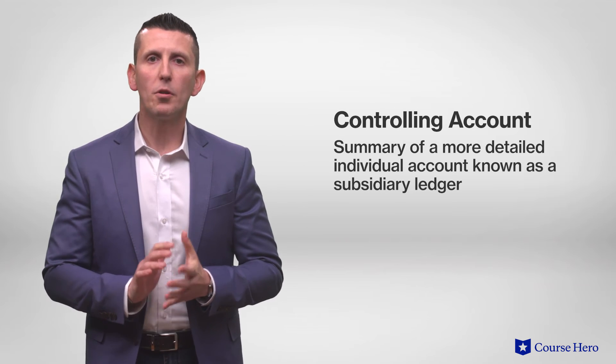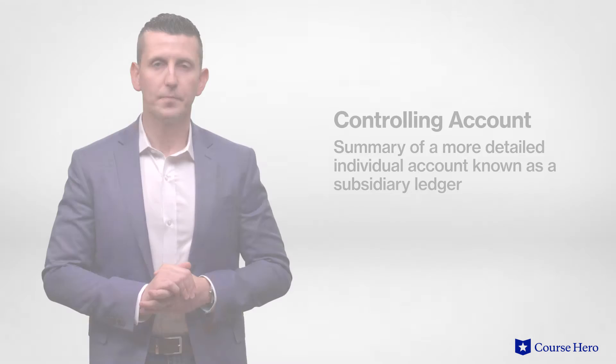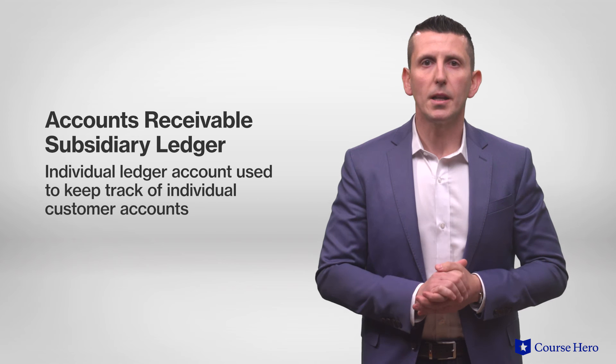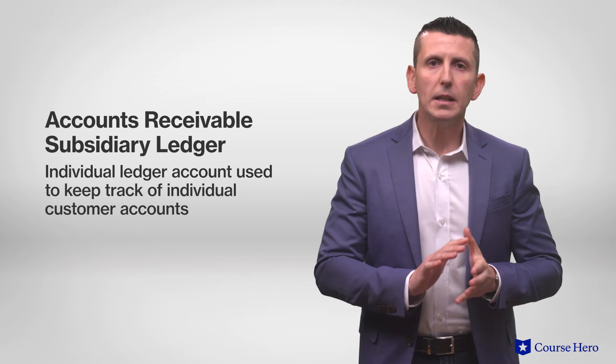A controlling account is a summary of a more detailed individual account known as a subsidiary ledger. For example, John Wales is a customer of ABC Company. He purchased $5,000 worth of supplies on account and now his current outstanding balance is $10,000. However, upon looking at the balance sheet, ABC Company has a total balance in the accounts receivable account of $50,000. John's outstanding balance of $10,000 is only part of what makes up the current accounts receivable balance for ABC Company. The accounts receivable subsidiary ledger, also called the customer ledger, is an individual ledger account used to keep track of all individual customer accounts. These individual accounts are then summed together to make up the total accounts receivable balance, known as a controlling account.